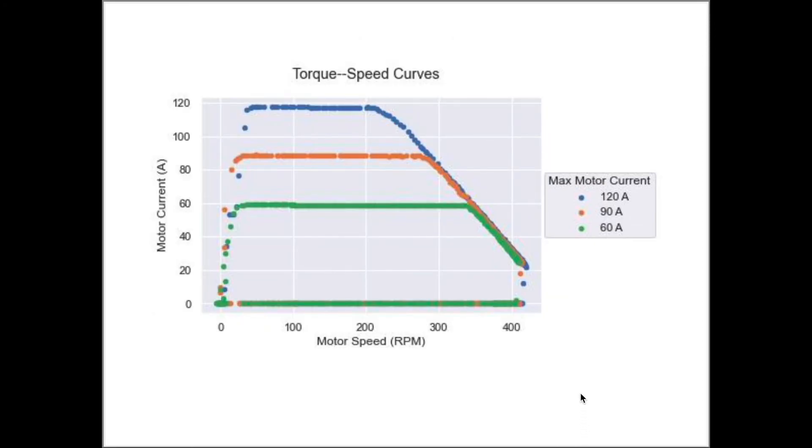The previous graphs have all been time series graphs with the elapsed time on the x-axis. If we take each of these full throttle runs and plot the motor current against the motor speed, we can plot a torque speed curve.